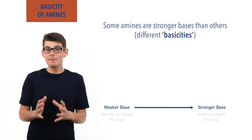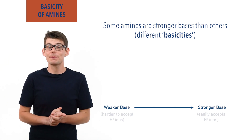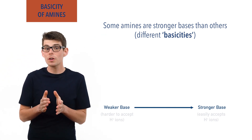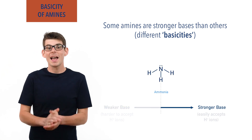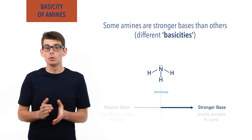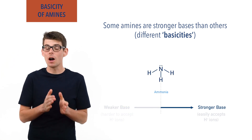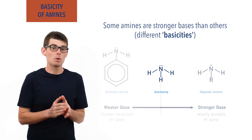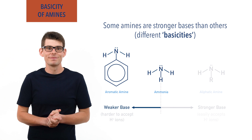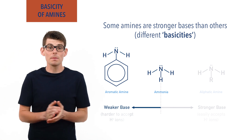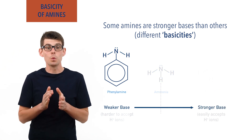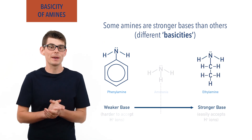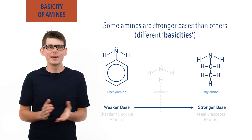Some amines are very good at accepting and holding on to H+ ions, and are stronger bases than ammonia. As a rule, aliphatic amines have a higher basicity than ammonia, and aromatic amines have a lower basicity than ammonia. For example, phenylamine is a weaker base than ammonia, and ethylamine is a stronger base than ammonia. But why?